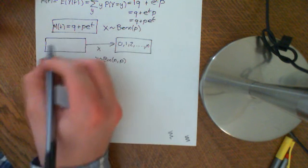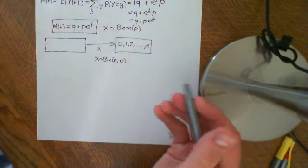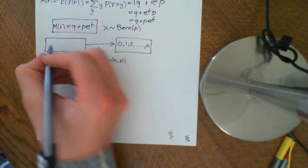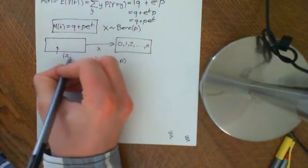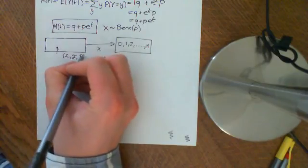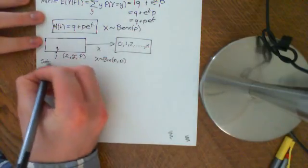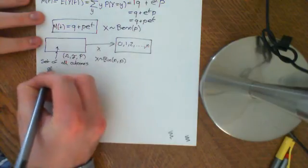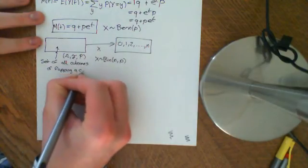So think of a probability space which is distributed binomially. Let's take the probability space of tossing a coin n times. In this probability space you have all outcomes — this is the probability space with sample space omega, set of events F, and probability measure P — and this is the set of all possible outcomes of flipping a coin n times.